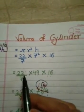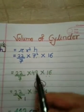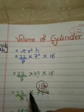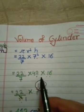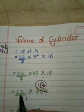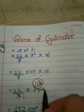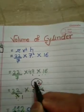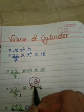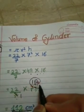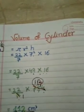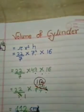So we have 22 upon 7, and 7 squared is 49, and 16 as it is: 22 upon 7 into 49 into 16. By multiplication, the 7 cancels with 49 to give 7, and then 22 into 7 into 16. We get the answer 112 cm³, which is the volume of the cylinder tiffin.